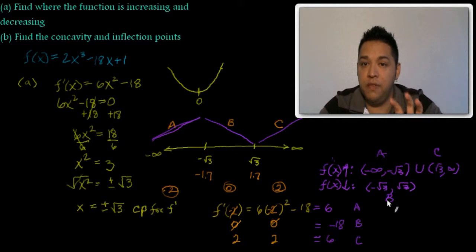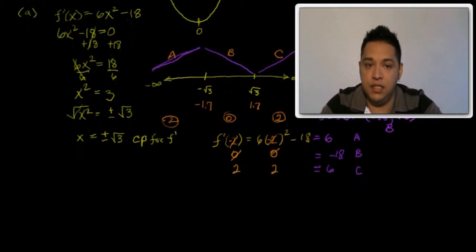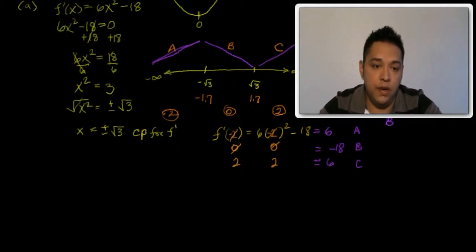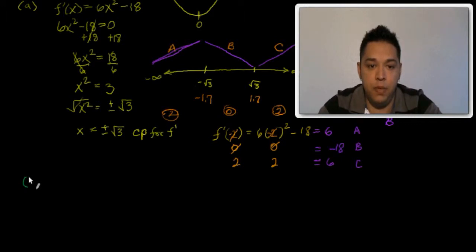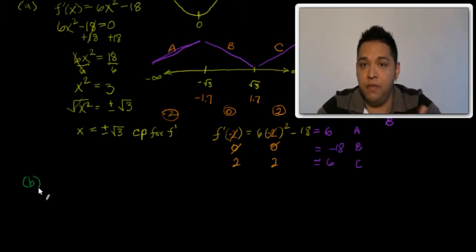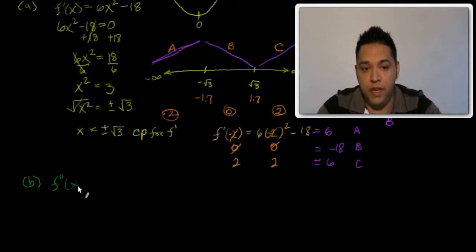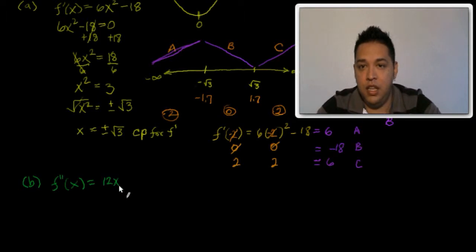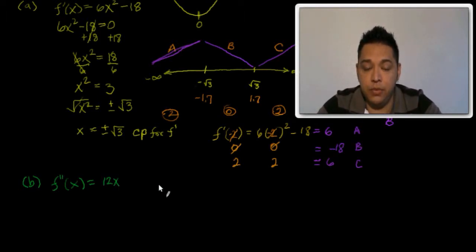For part B, we need to find the concavity and the inflection points. To find the concavity, we need to take the second derivative, which is f double prime of x. That is equal to 12x — the constant drops and we are left with this.